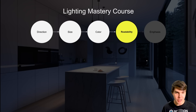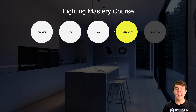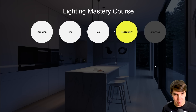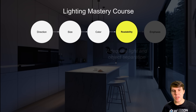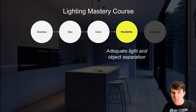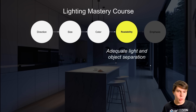We've talked about direction, size, and color — and now we're going to talk about readability of lighting, which is essentially two things: adequate light and object separation.